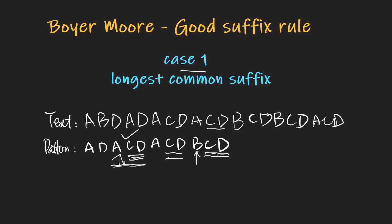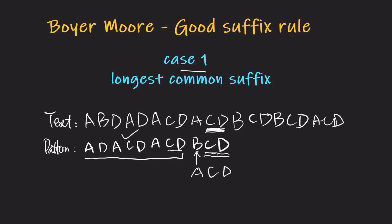Which one should we align with this CD? The answer is the longest one. We should align this part — align this CD with this CD. So: CD, ACD, DCA, AD, DCD.